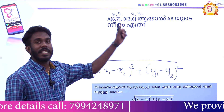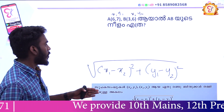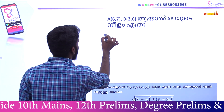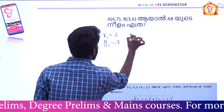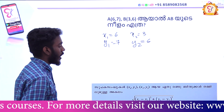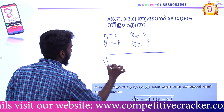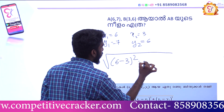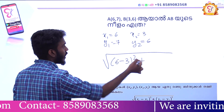We have two different coordinates in this case. Let's take a look at the value of x1. x1 is 6, y1 is 8, x2 is 3, y2 is 6. The equation is the root of x1 minus x2 whole square plus y1 minus y2. x1 is 6, minus 3.